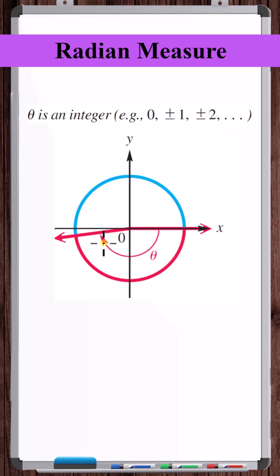If the angle theta shown here is measured in radians and it's an integer, so zero or plus or minus one, plus or minus two, et cetera, then based on its location, what must the value of theta be?